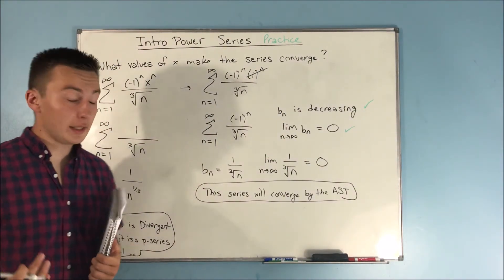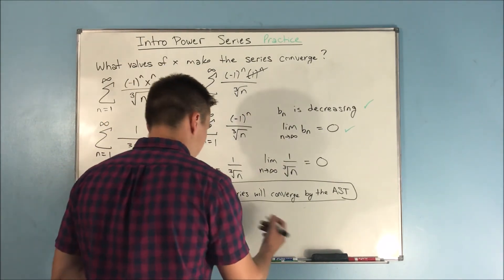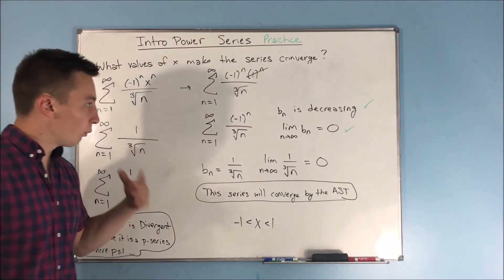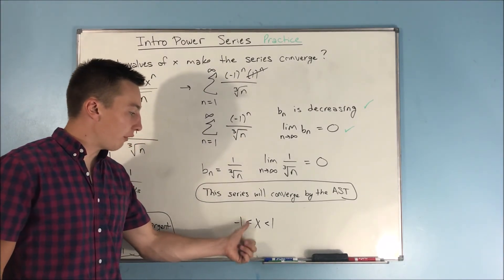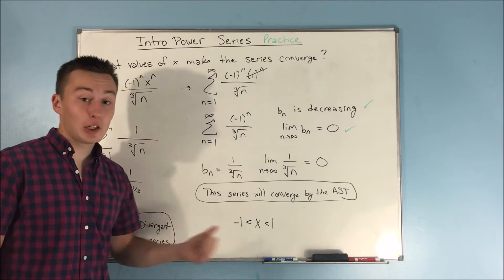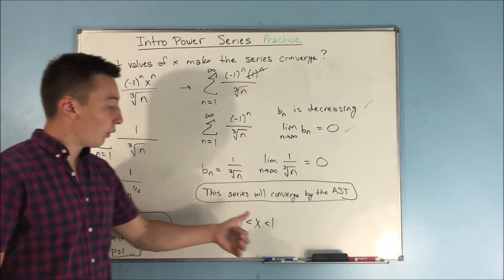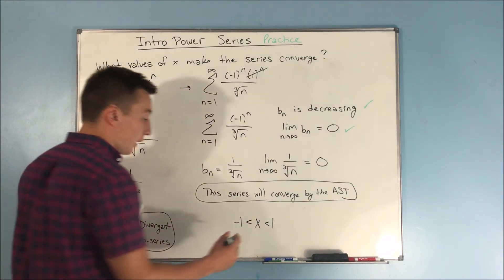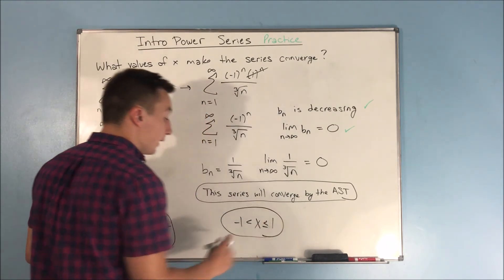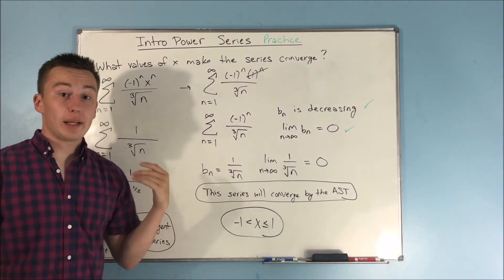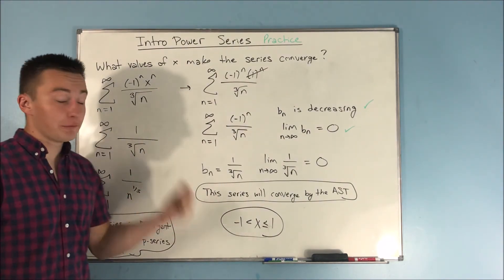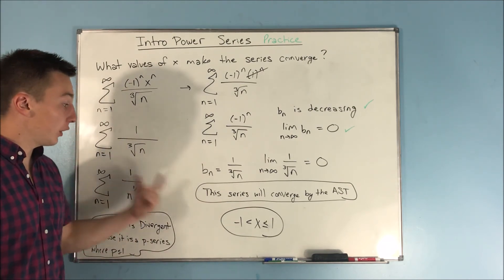So what does this all mean? We already figured out that x is convergent between negative 1 and 1. When we plugged in negative 1, the series was divergent, so we don't include negative 1. But with x equals 1, the series was convergent, so we do include 1 in our interval. That is the interval of x values making the series converge: negative 1 is excluded, 1 is included.